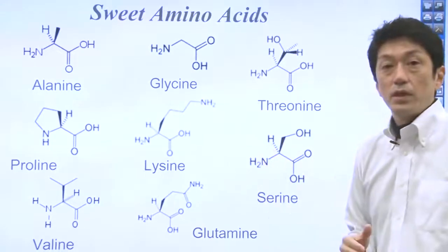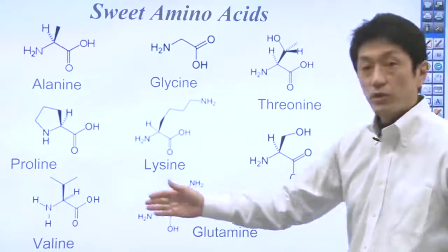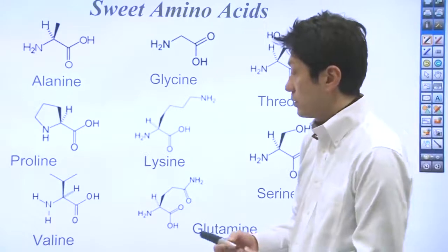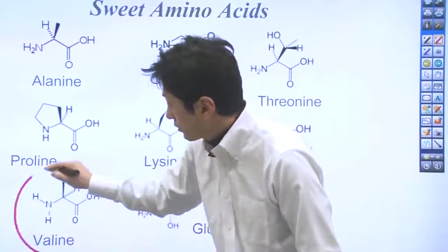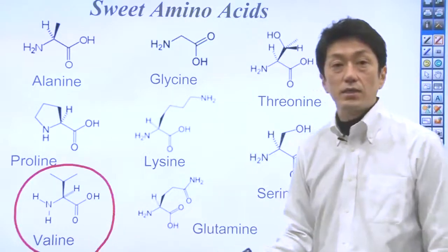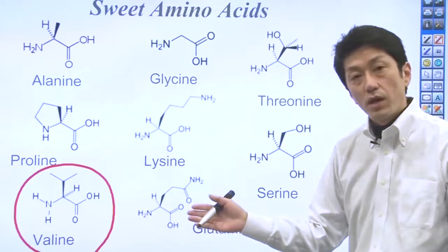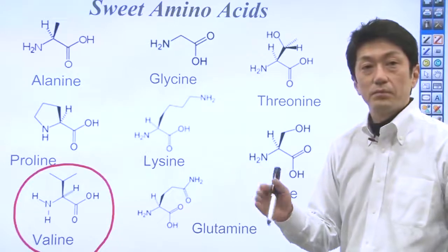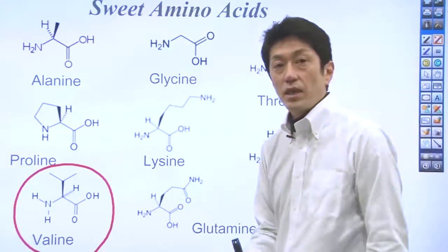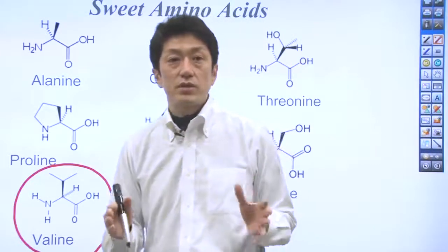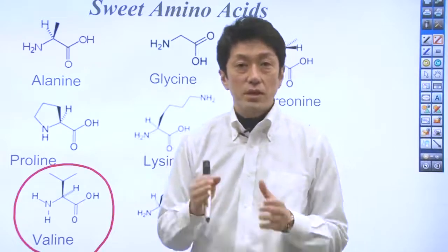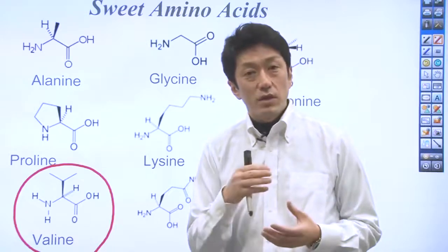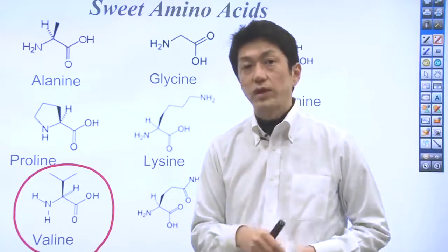For example, valine is categorized as a sweet amino acid, but it tastes slightly bitter. Cysteine and methionine, which are categorized as bitter amino acids, taste slightly sweet. Tyrosine tastes bitter, but only slightly.